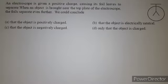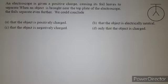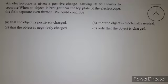In this video we will discuss another problem of electrostatics. In the question it is mentioned that an electroscope is given a positive charge, causing its foil leaves to separate. When an object is brought near the top plate of the electroscope, the foils separate even further. There are four possible options and we have to find the possible conclusion.